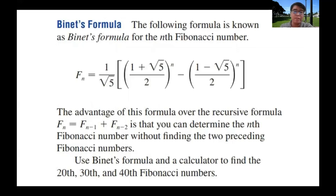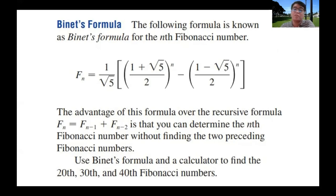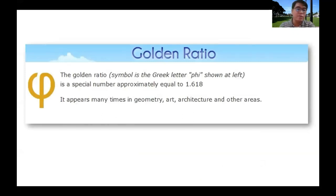There is one formula developed by Binet. Binet's formula states that the nth Fibonacci number equals 1 over the square root of 5, times (1 plus square root of 5) over 2, raised to the n. The advantage over the recursive formula is that we can determine the nth Fibonacci number without finding the two preceding Fibonacci numbers — I could calculate Fib 20 without knowing Fib 19 and Fib 18, or Fib 40 without knowing Fib 39 and Fib 38.